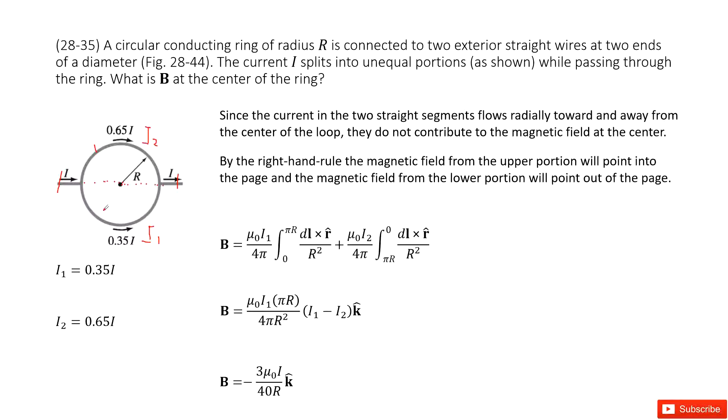We can see this, we use the Biot-Savart law, and then we can see the radius is R and dl cross I. And how we integrate this dl—this is a length for arc from zero to pi times R.